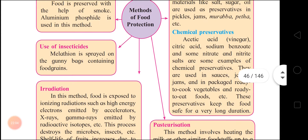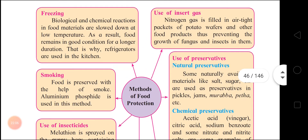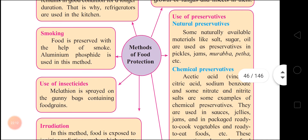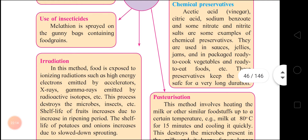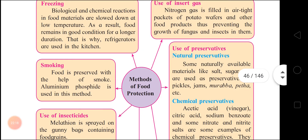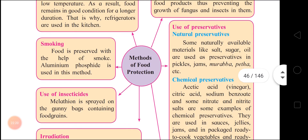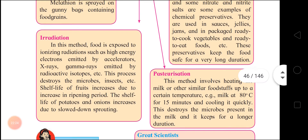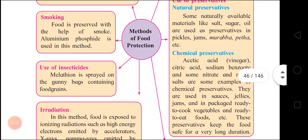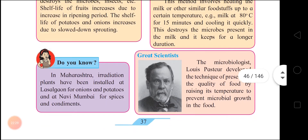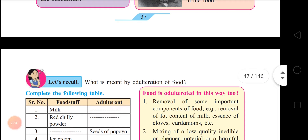So all these are methods of food protection: freezing, smoking, use of insecticides, irradiation, use of inert gases, use of preservatives — both natural and chemical — and finally pasteurization. Now the next topic we are going to cover is adulteration.